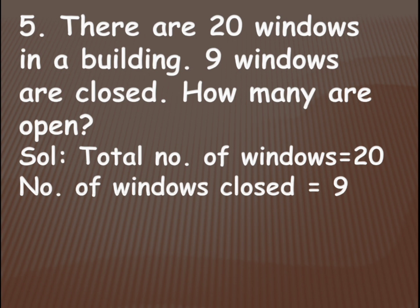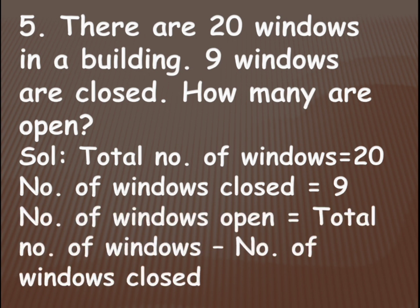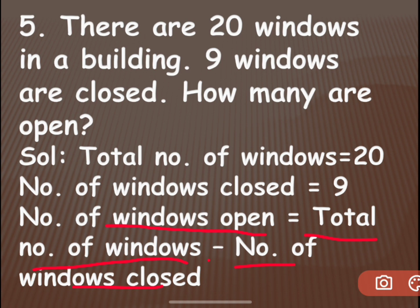If you subtract 20 minus 9 you will get the answer. 20 is the total number of windows, and 9 is the number of windows closed. So number of windows open is equal to total number of windows minus number of windows closed — that is 20 minus 9.